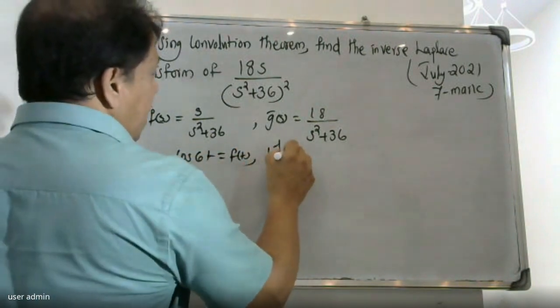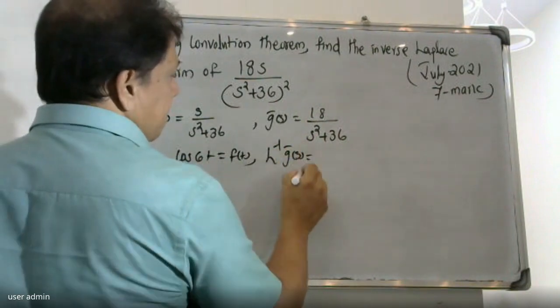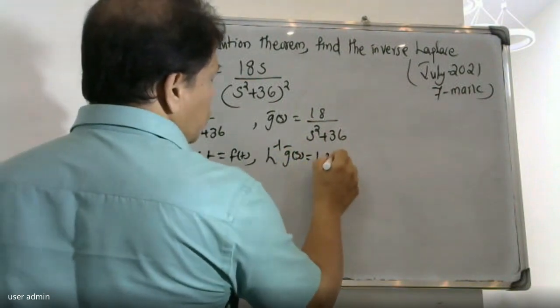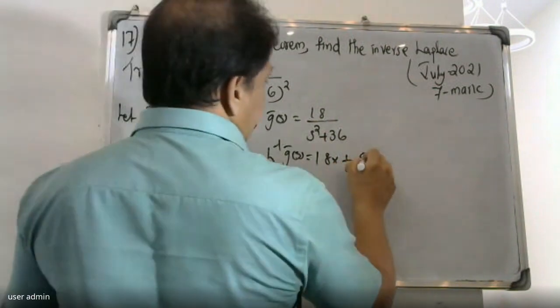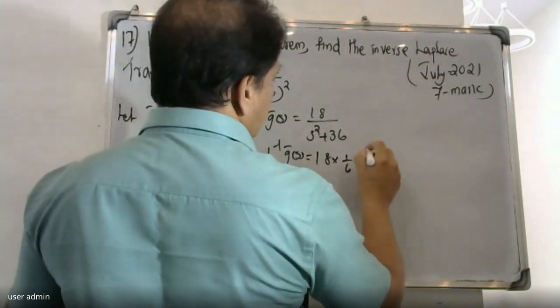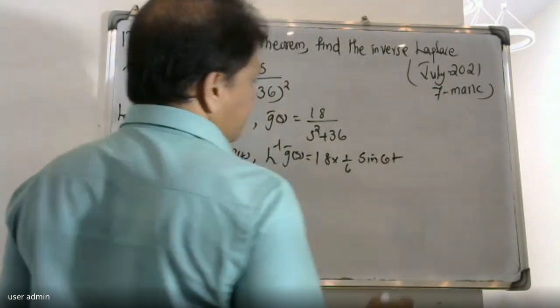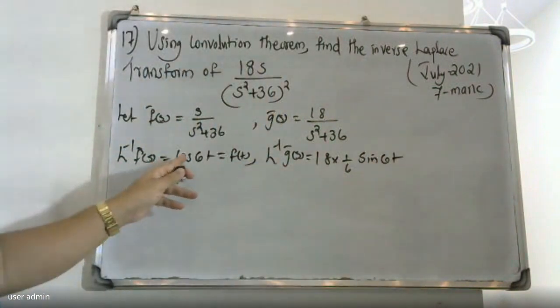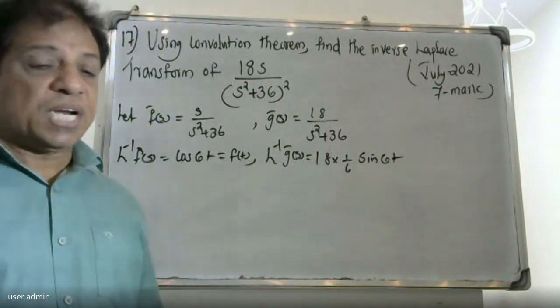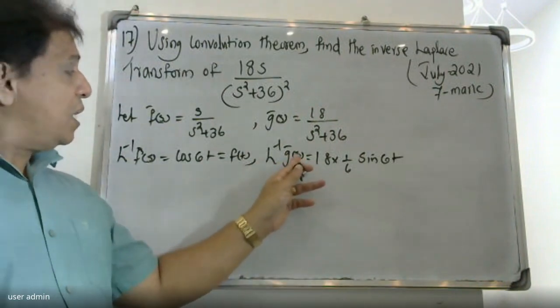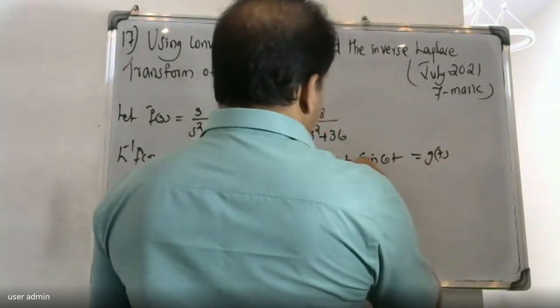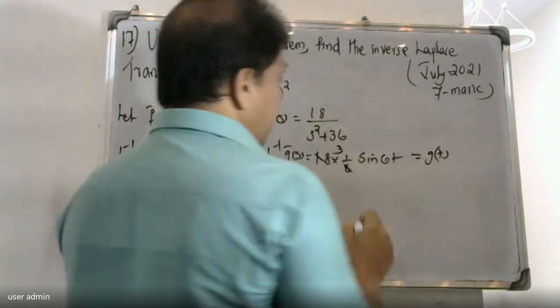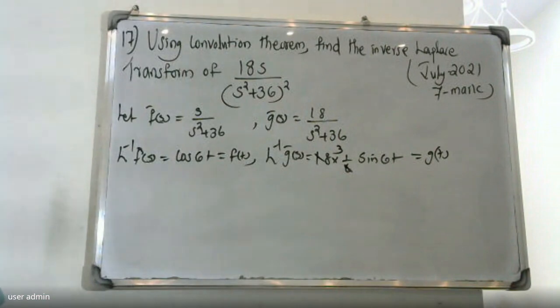L inverse of g bar, the inverse Laplace of 18 times 1 by s squared plus 36, equals 18 times 1/6 sin 6t. This equals 3 sin 6t. This is the value of g(t).